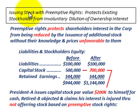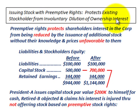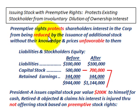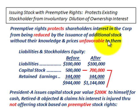What we're going to be going over here is issuing stock with preemptive rights. That's where you protect the existing stockholders from any involuntary dilution of their ownership interest. These preemptive rights protect the shareholders' interest in the corporation from being reduced by the issuance of any additional stock without their knowledge and at prices that would be unfavorable to them.